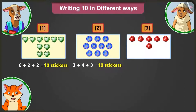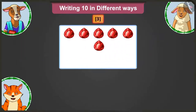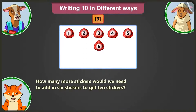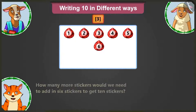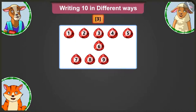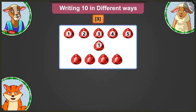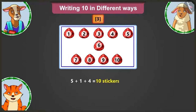Billy is asked about the third card. There are six stickers counted. Adding four more stickers to six will make ten stickers — counting on: seven, eight, nine, ten. Lily then explains the arrangement: five in the first row, one in the second row and four in the third row. So we write: five plus one plus four equals ten stickers.